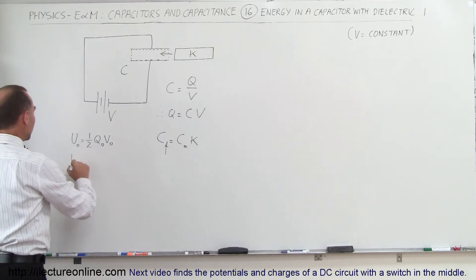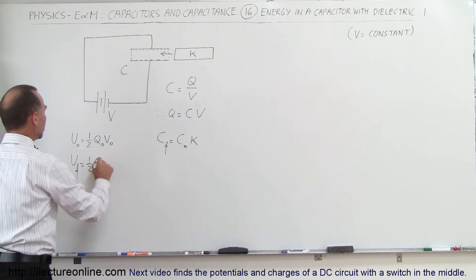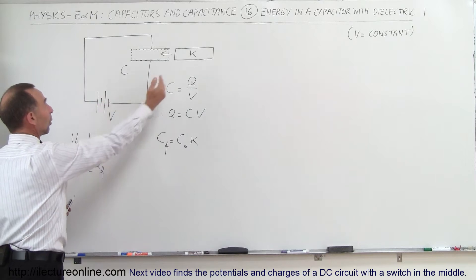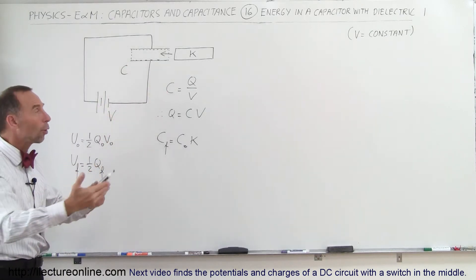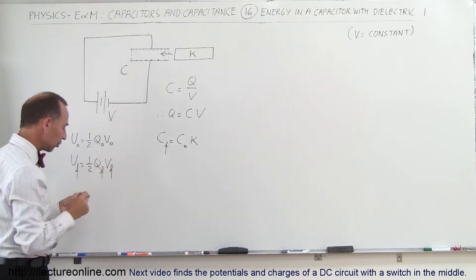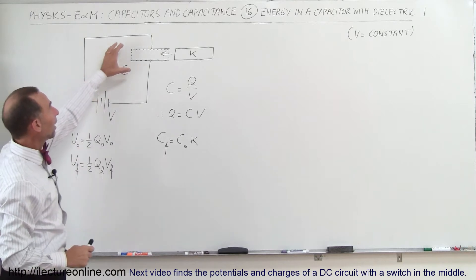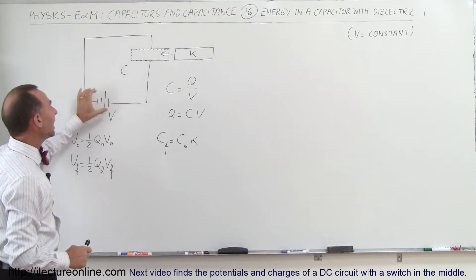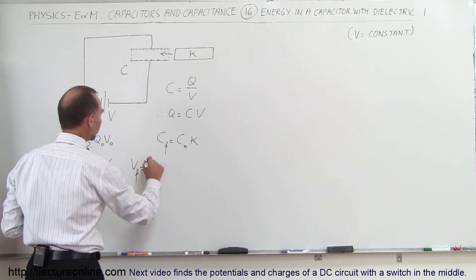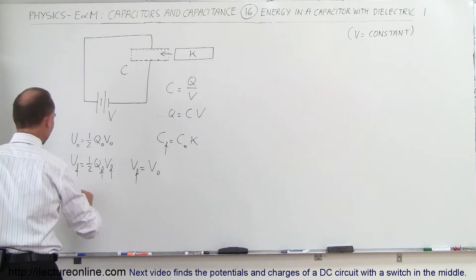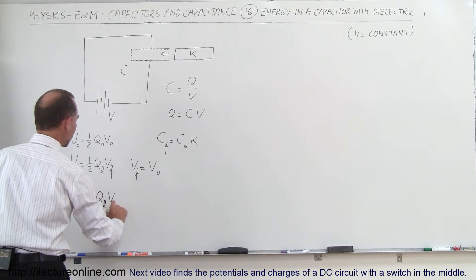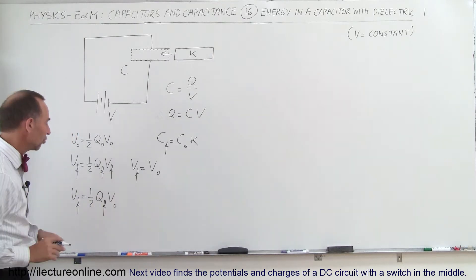Let's figure out what the new energy stored in the capacitor will be after we push the dielectric in. U_final equals one-half times the final charge times V_final. Since the capacitor is connected to the battery while we do this, charges can flow onto or away from the capacitor. However, the battery will maintain the same voltage, so V_final equals V_initial. Therefore, U_final equals one-half times Q_final times V_initial.